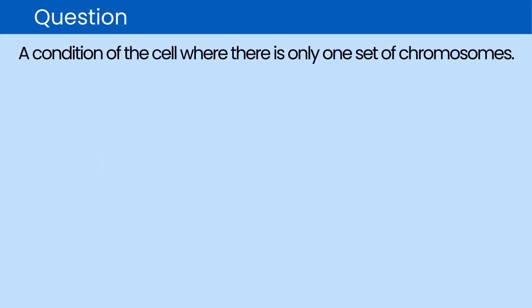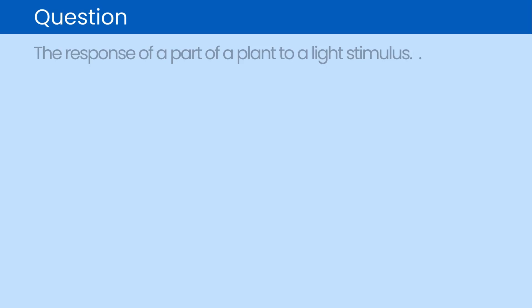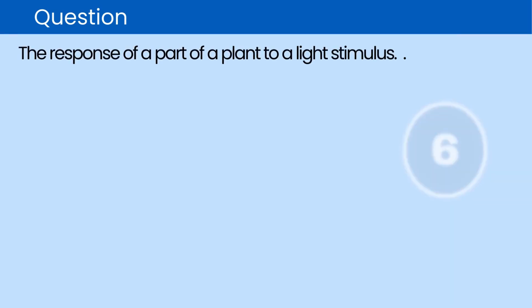Question. A condition of the cell where there is only one set of chromosomes. The correct answer is haploid. Question. The response of a part of a plant to a light stimulus. The correct answer is phototropism.